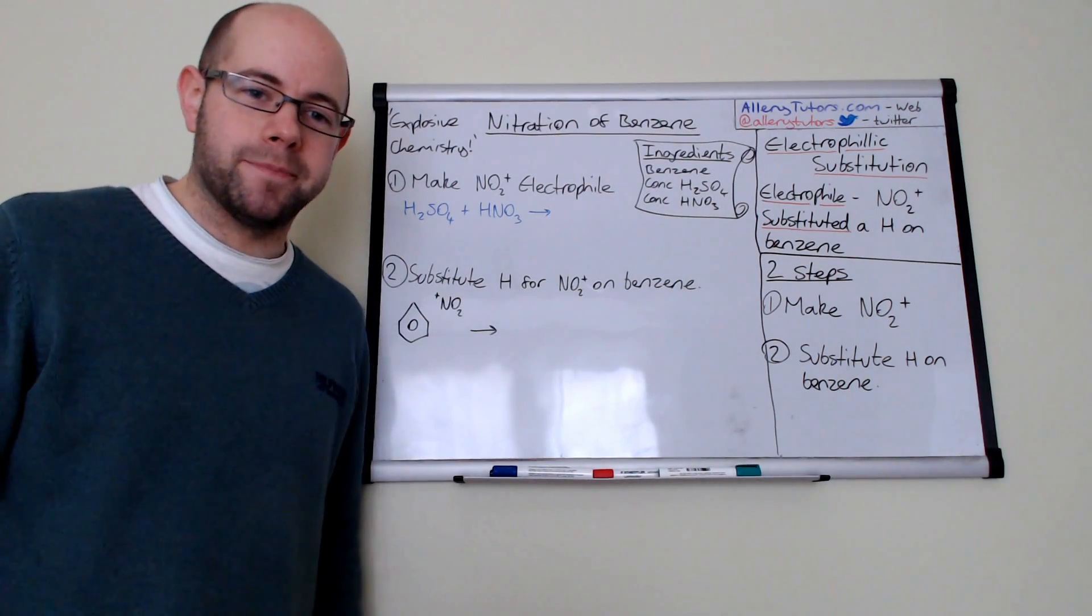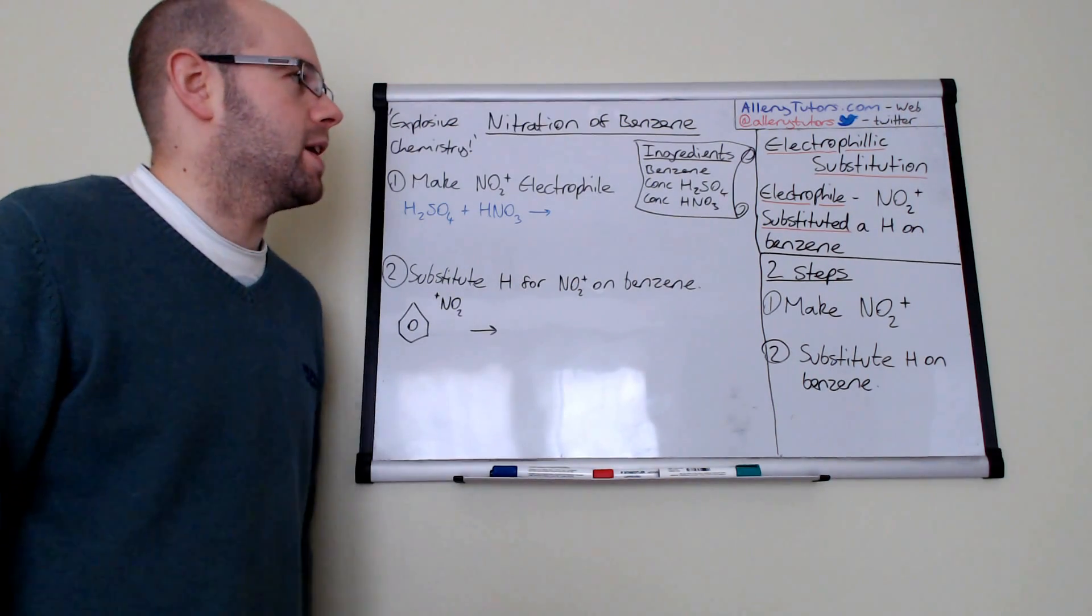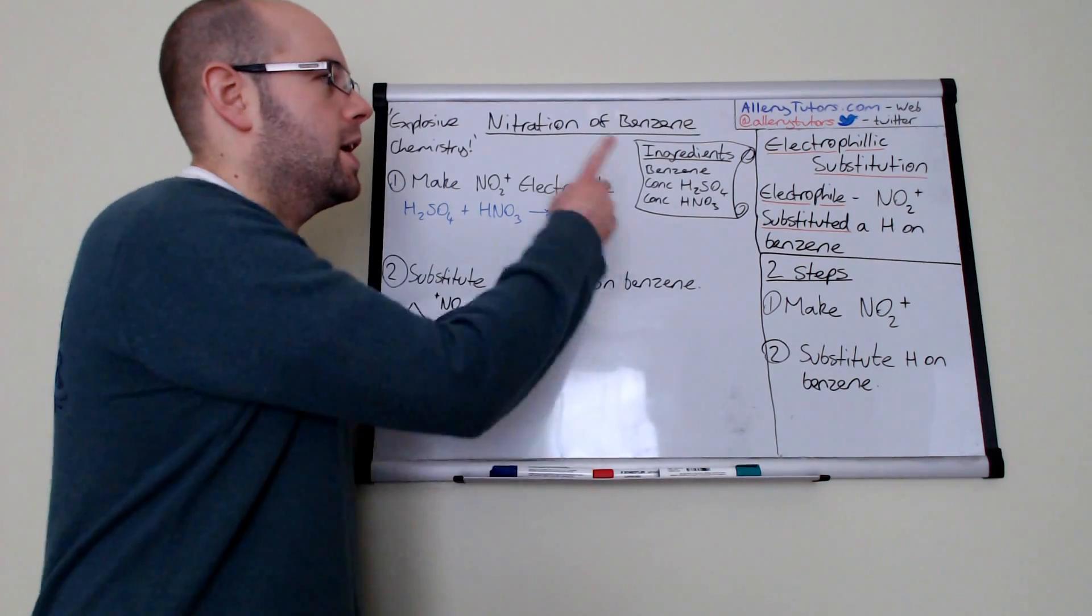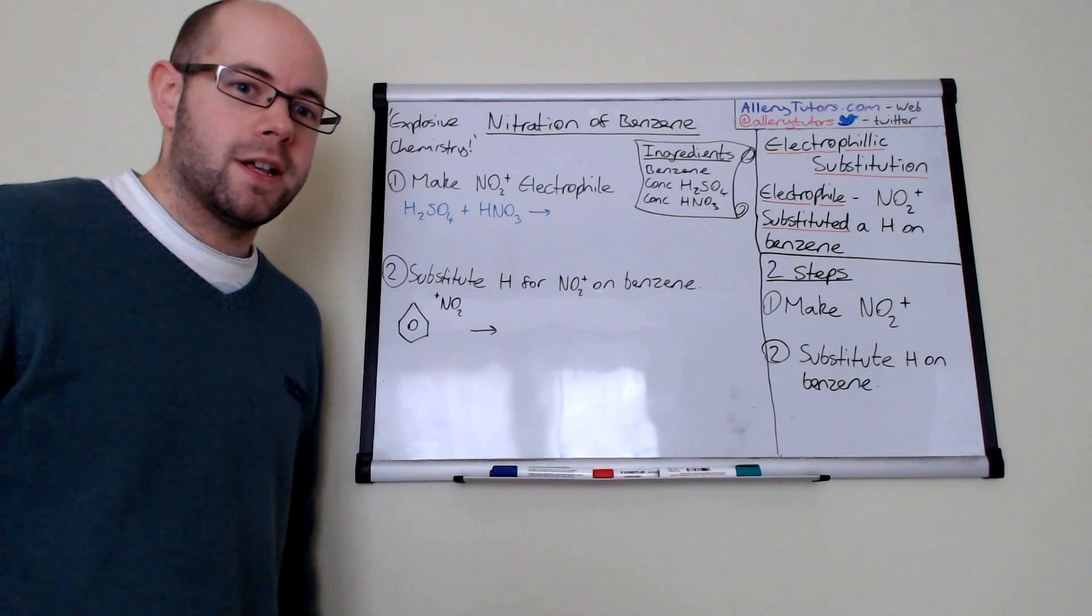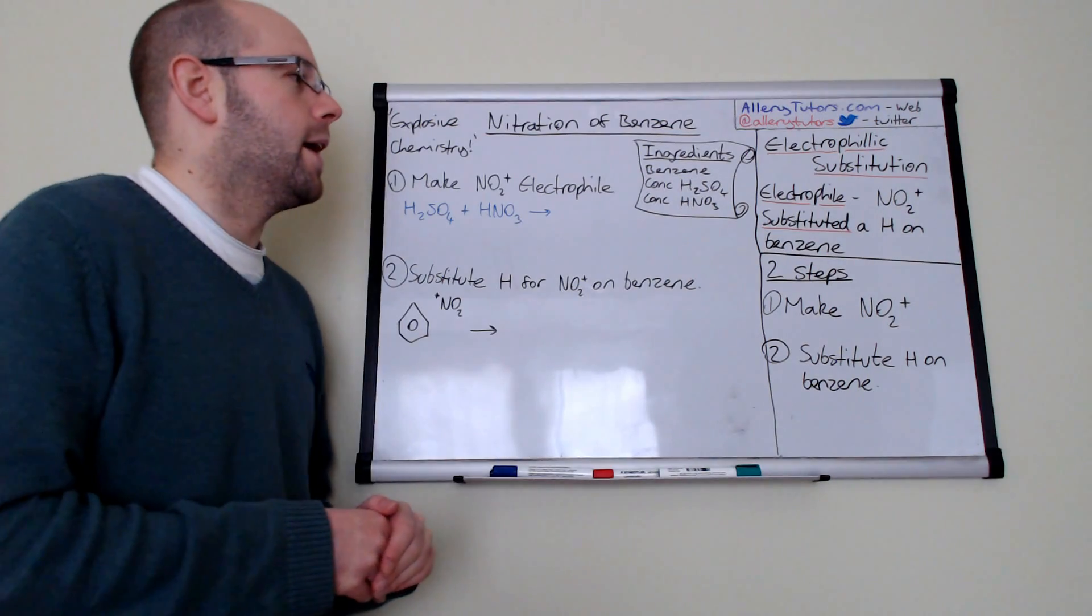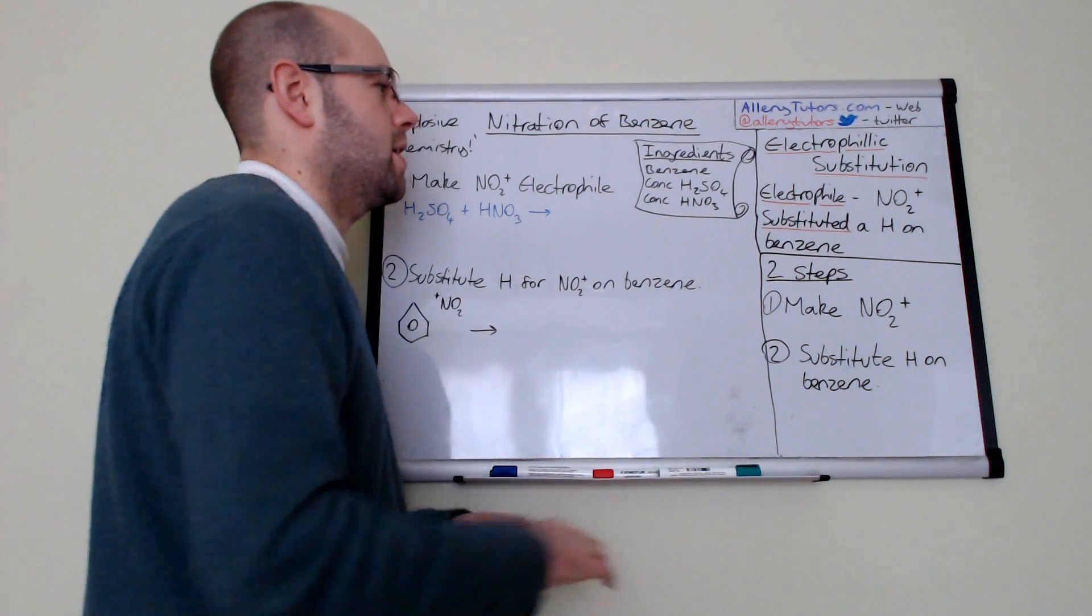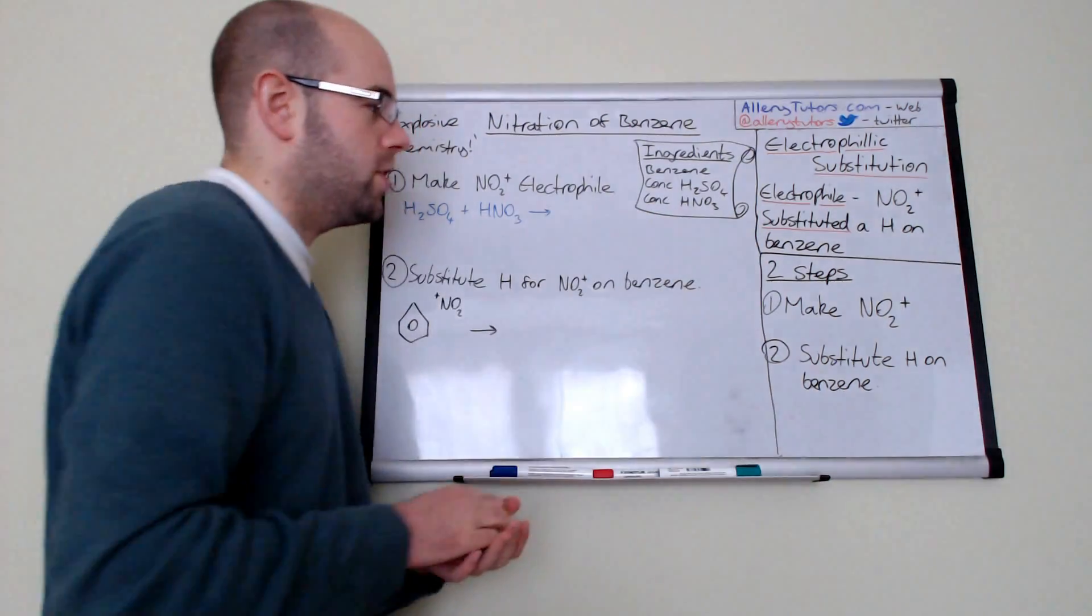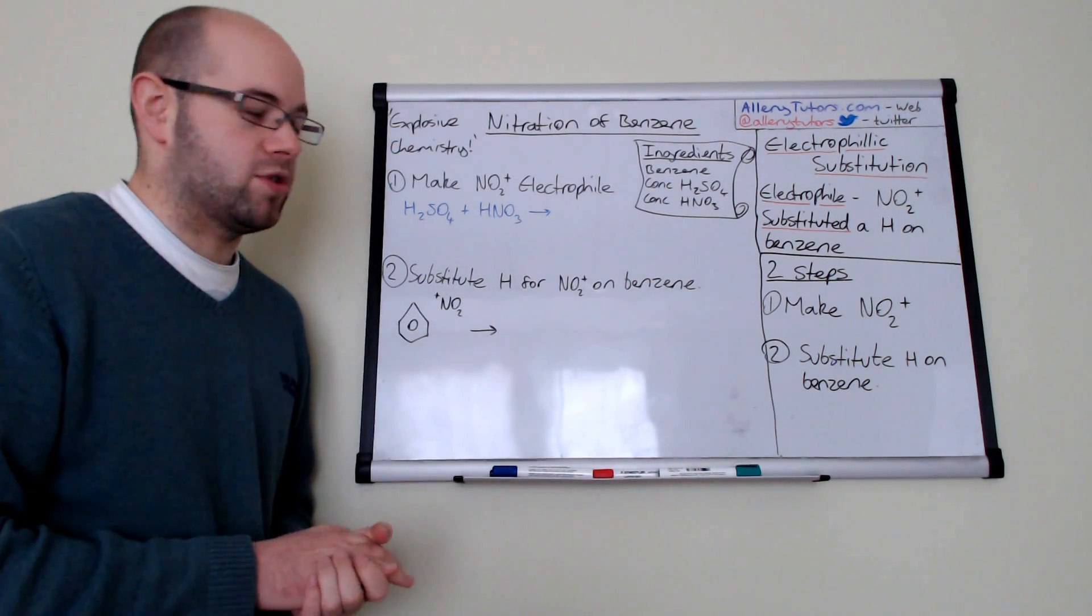Let's start with the type of reaction we have. The reaction is called nitration but the mechanism is electrophilic substitution. So we need an electrophile and we need to substitute something. The electrophile we need to make is NO2+ and we're substituting a hydrogen on the benzene. First step is to make NO2+, second step is to substitute the hydrogen on the benzene.